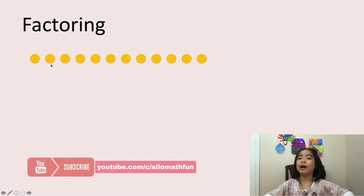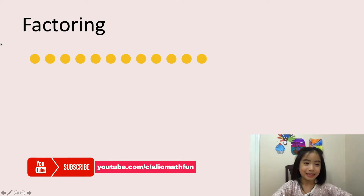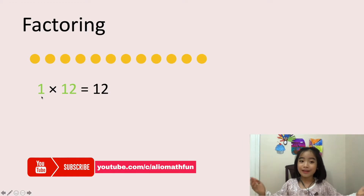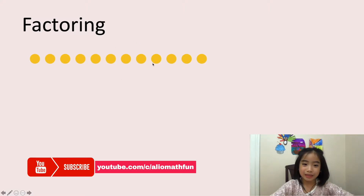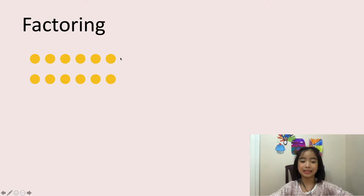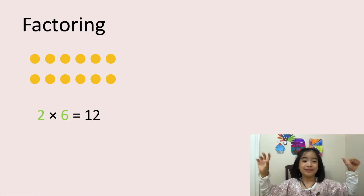So here are 12 dots. We need to find the factors of 12. As you can see, there is one row with 12 dots. We also know that 1 times 12 equals 12, so 1 and 12 are factors of 12. Now I can also put them in two rows, and in each row there are 1, 2, 3, 4, 5, 6 — six dots. We know that 2 times 6 equals 12.